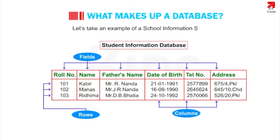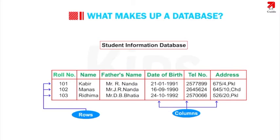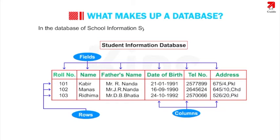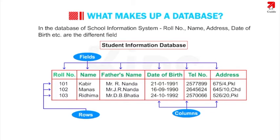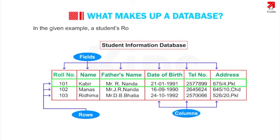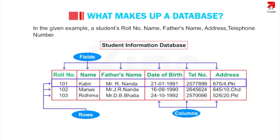Let's take an example of a school information system. A column in a table that contains only one type of information is called a field. In the database of a school information system, role number, name, address, date of birth, etc. are the different field names. A collection of fields makes one record. A record displays all the information about a single entity. In the given example, a student's role number, name, father's name, address, telephone number, and date of birth indicate one complete record of a student.